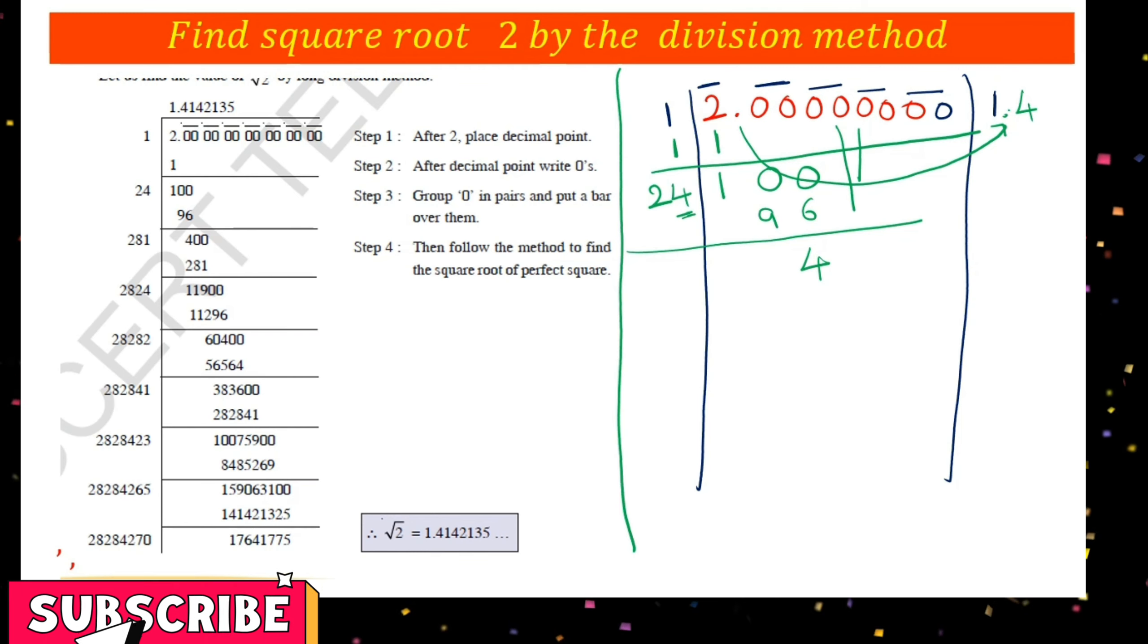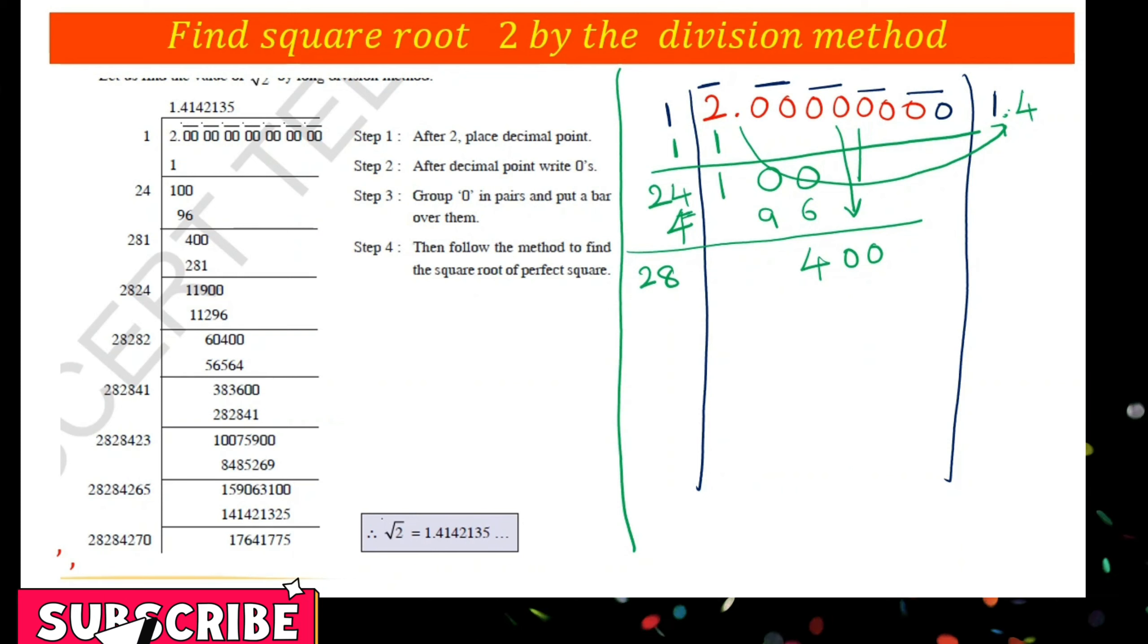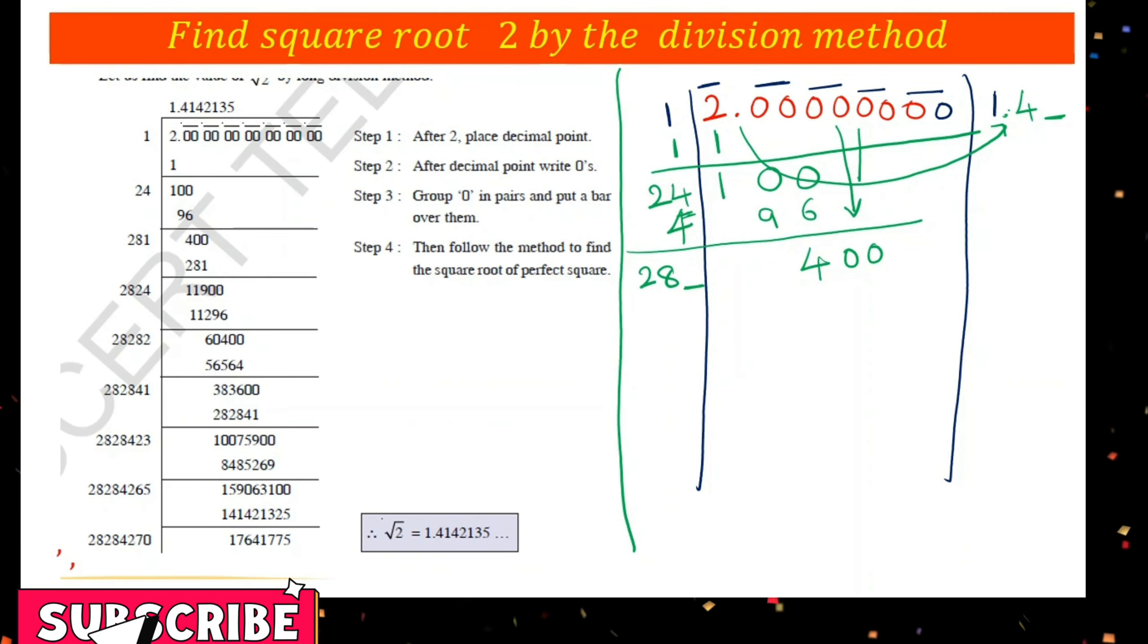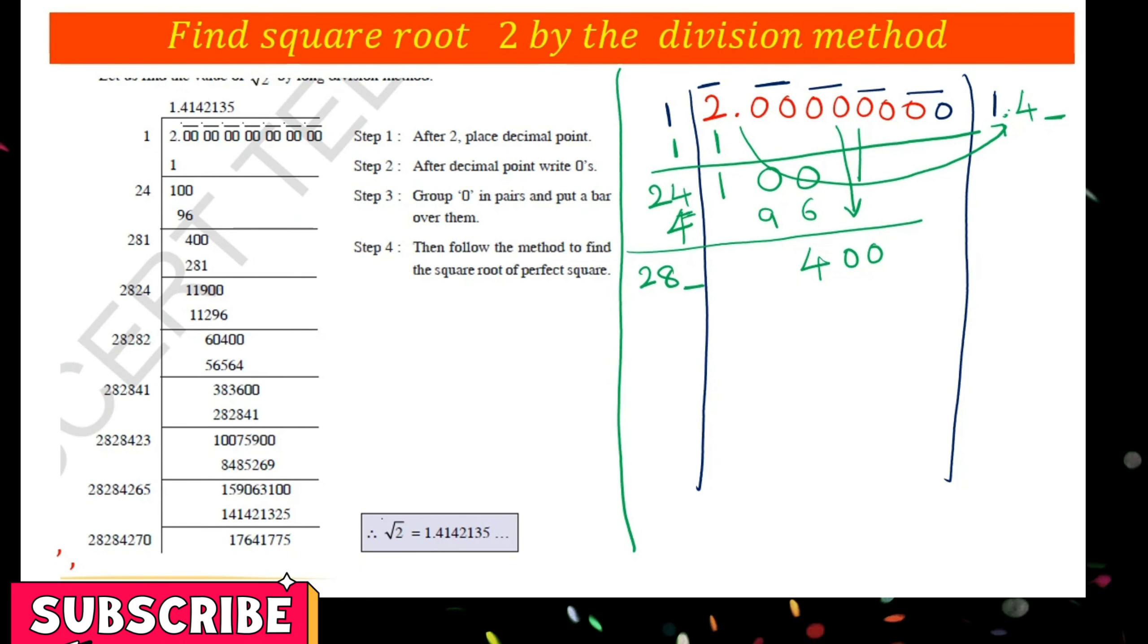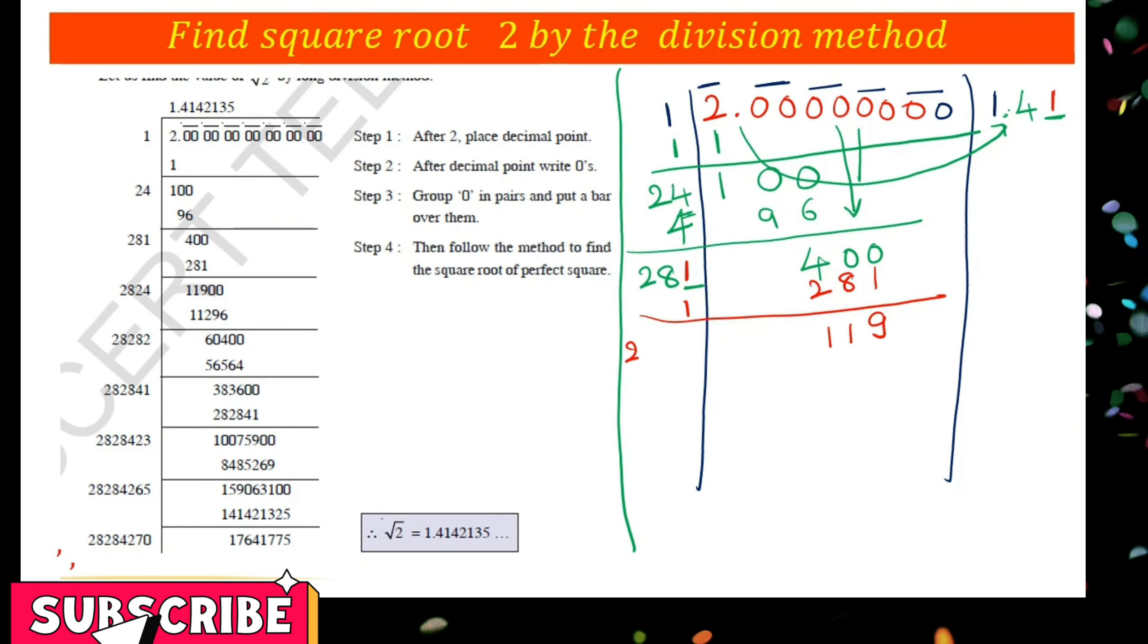Bring down another pair of zeros to get 400. Add the same number to get 28. The double of the quotient 14 is 28. For the third digit, we try 281 times 1, which gives 281. Subtract to get 119. Add the same number 281 plus 1 equals 282.